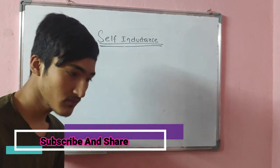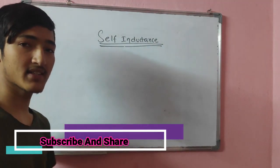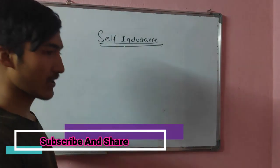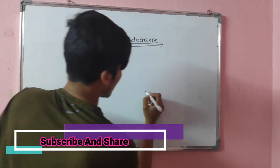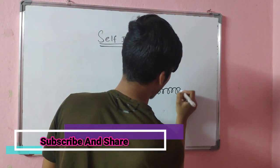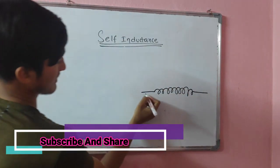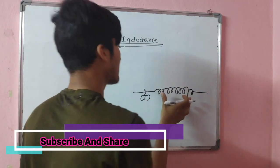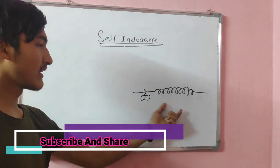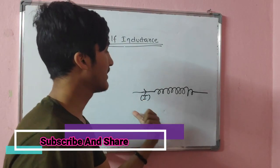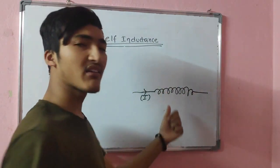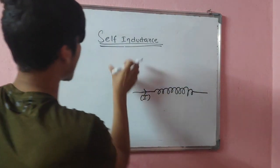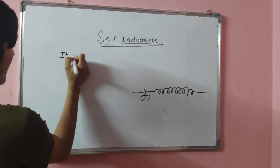Self-inductance is the phenomenon by which there is the generation or production of EMF by changing the current flowing through a particular coil or conductor. For example, consider a coil with N number of turns and I amount of current flowing through it. If, due to the flow of this current, an EMF is generated within this coil, then that phenomenon is known as self-inductance.